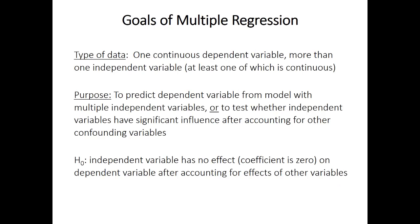What are the goals and requirements of multiple regression? The dependent variable must be continuous. There are multiple independent variables, at least one of which must be continuous, though there can be a mix of continuous and categorical predictors. There are two possible purposes: first, creating a model to predict the dependent variable from multiple independent variables; second, hypothesis testing to assess whether each independent variable has a significant influence on the dependent variable after accounting for all the other independent variables. You shouldn't mix these two goals.